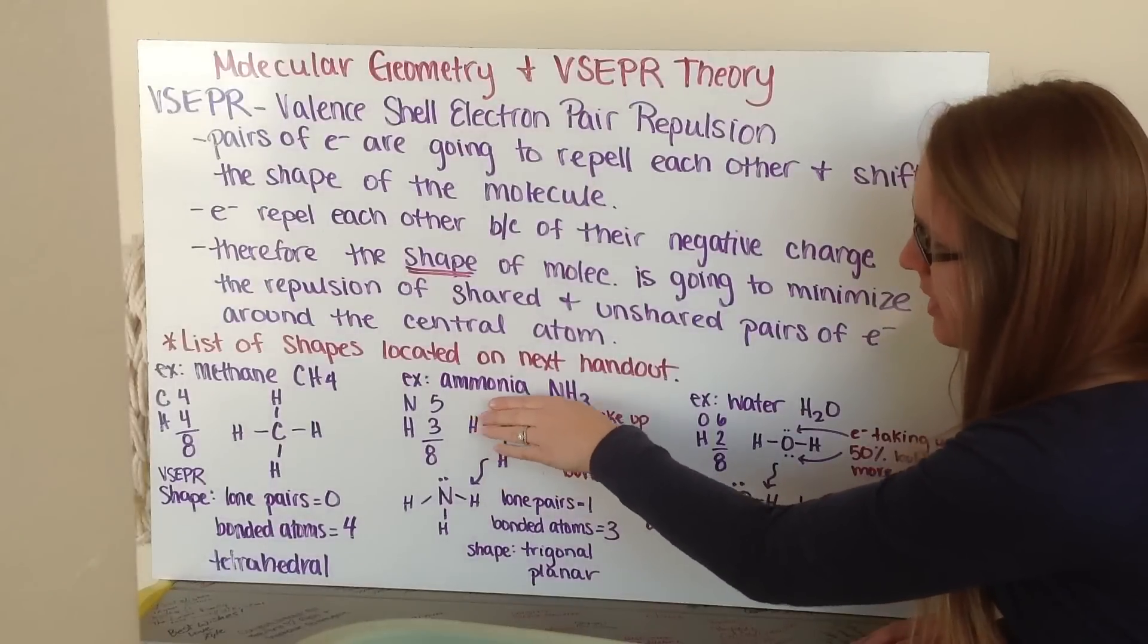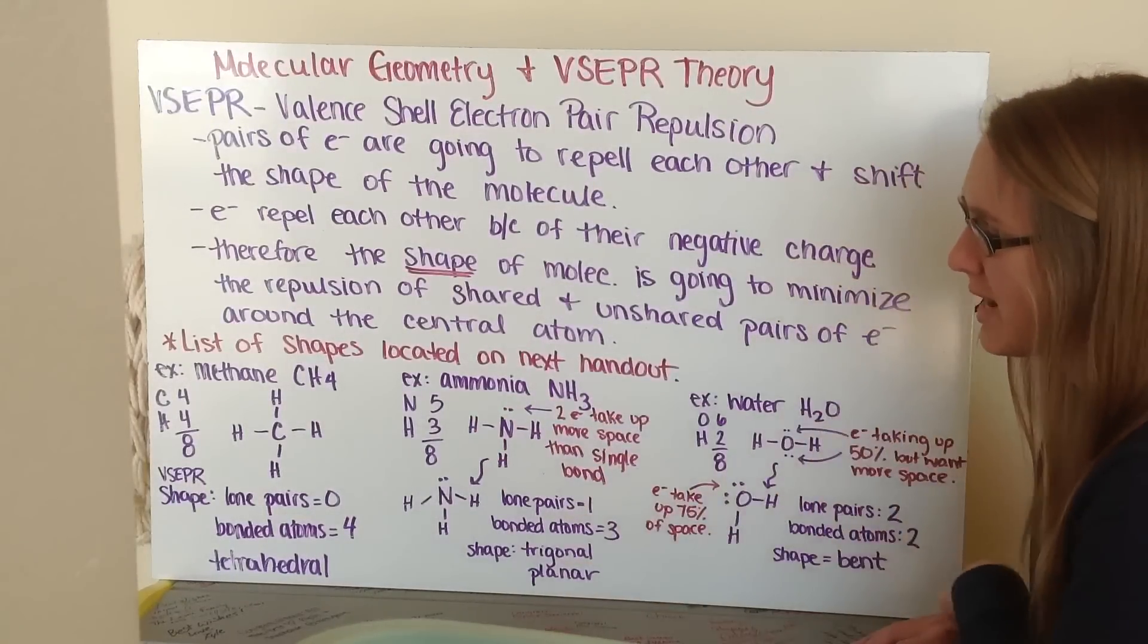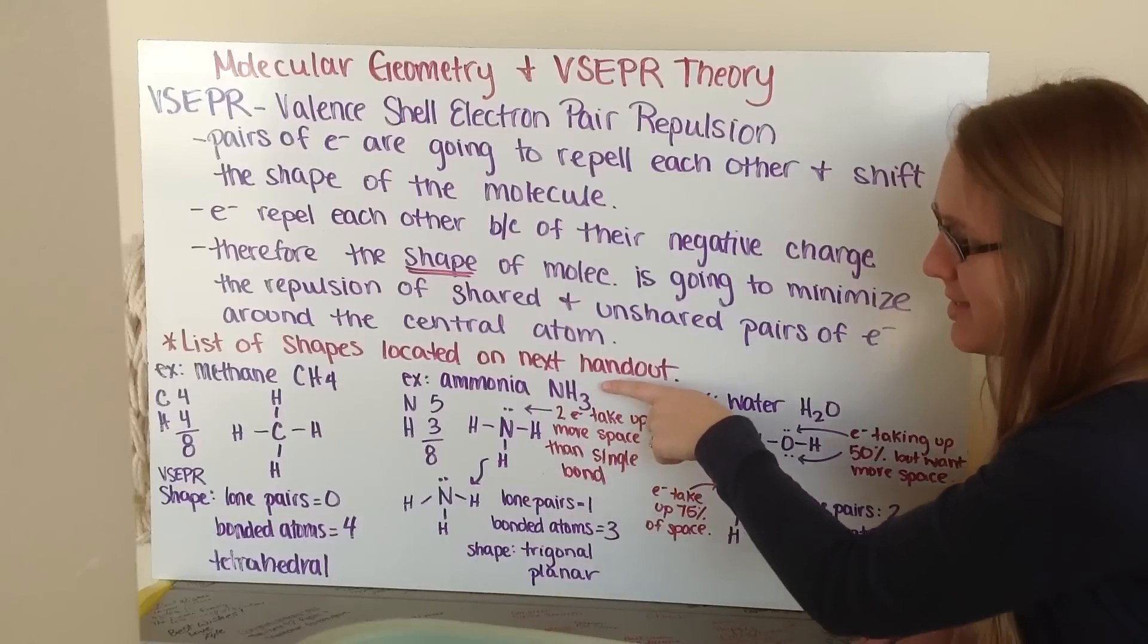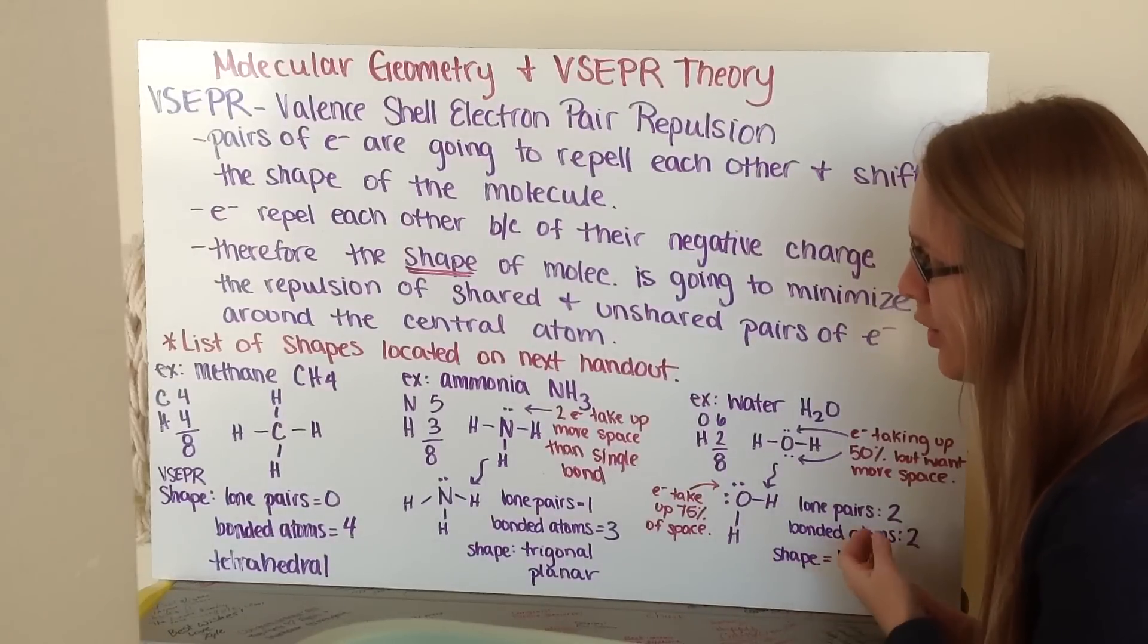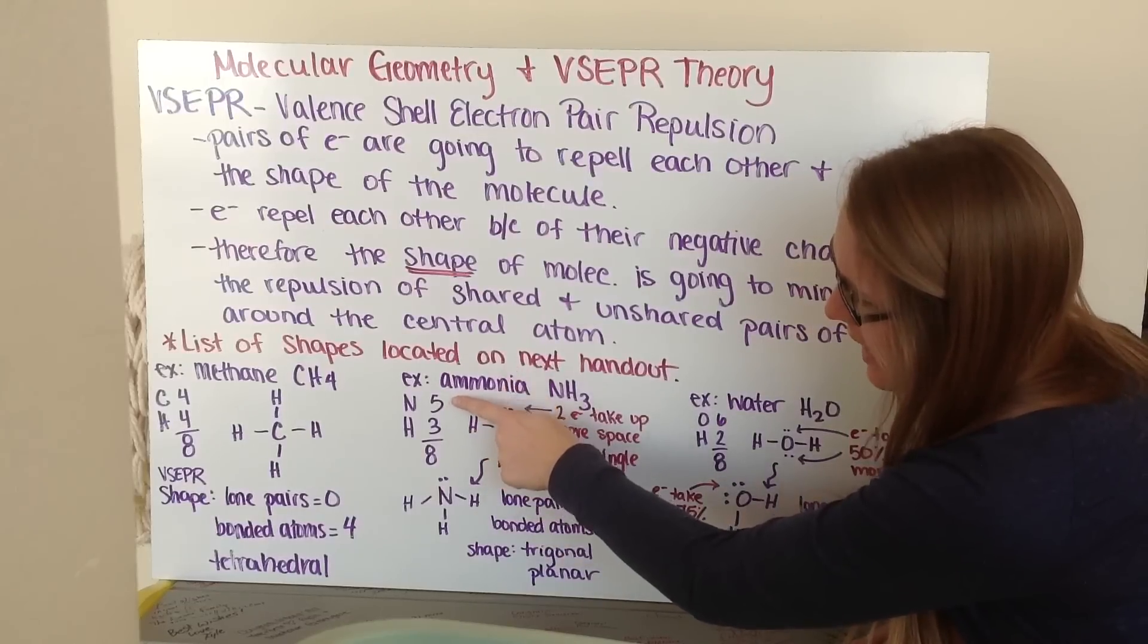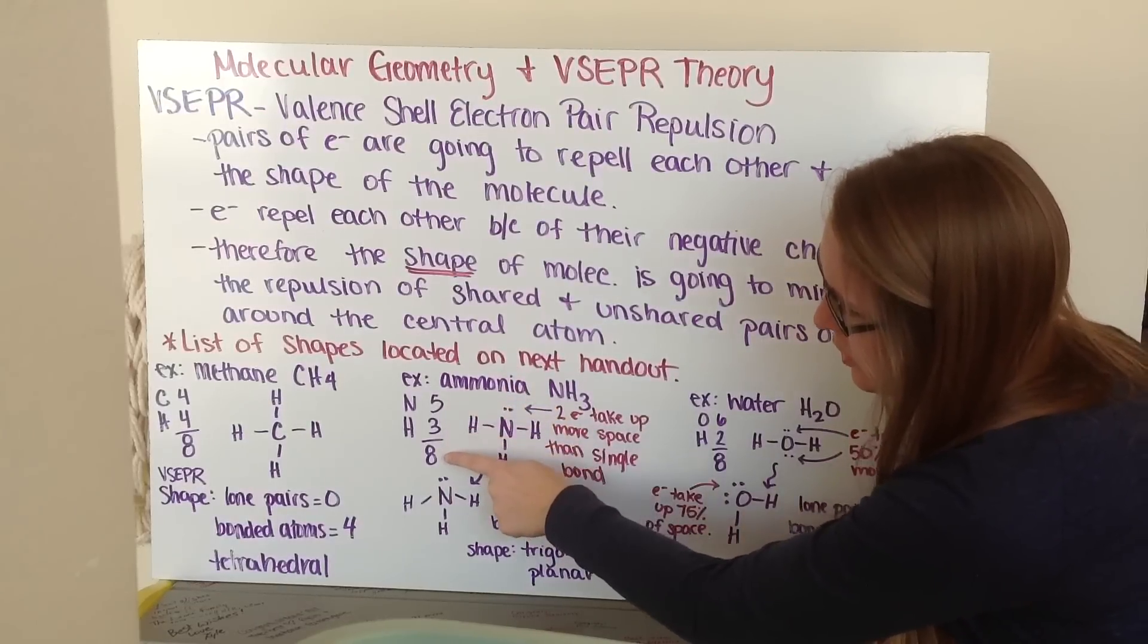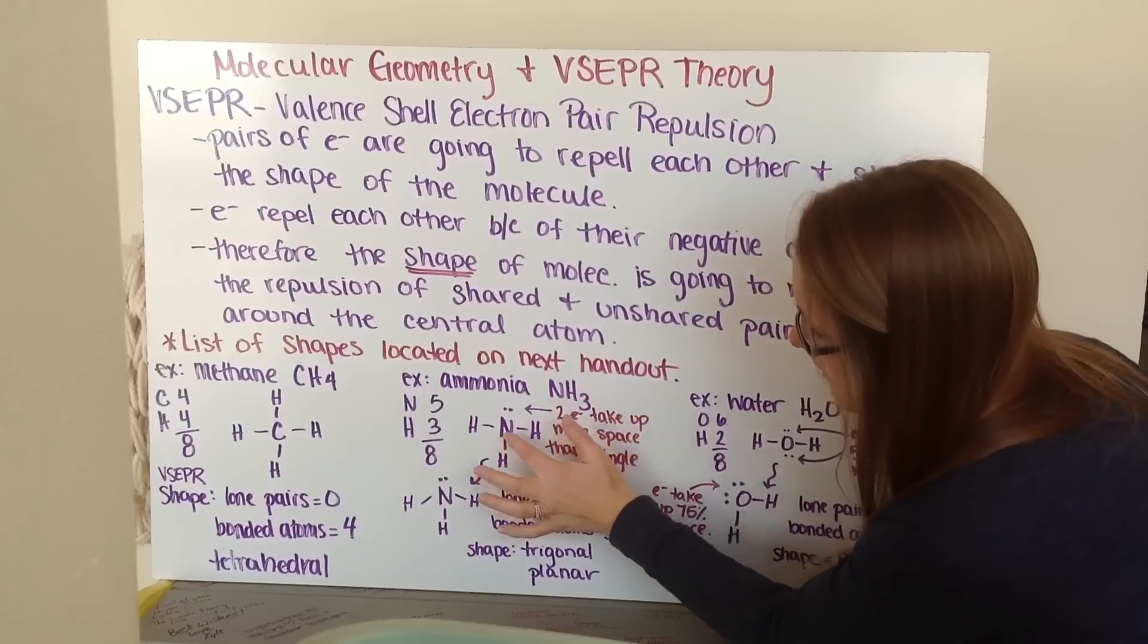My next example is ammonia. We have ammonium as one of our polyatomics. We get rid of one of those extra hydrogens and we have ammonia. This is that cleaning chemical that you probably have in your closet at home. Ammonia is NH3. My N here has five valence electrons. Hydrogen is three, so I total them together and that's eight.